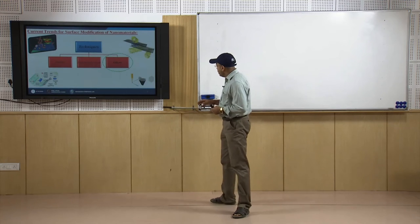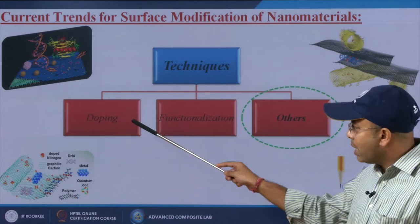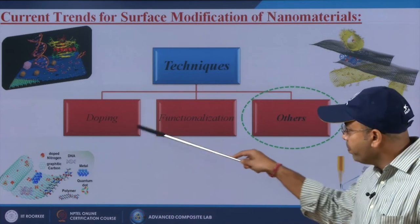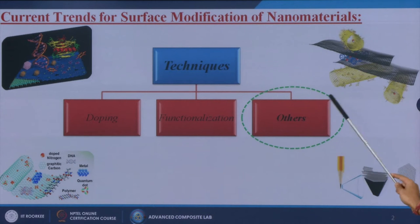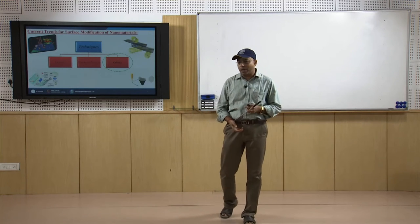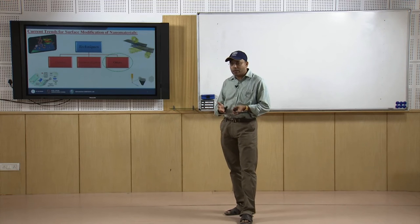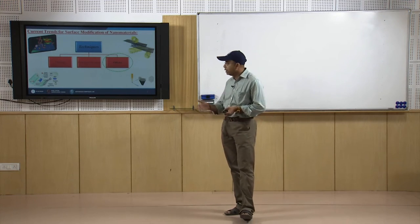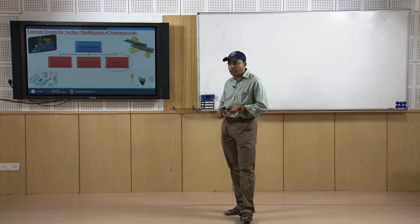If you remember, in our last two lectures we discussed about doping and functionalizations. In this particular lecture, we are trying to go for the other properties — maybe some kind of grafting will come, or maybe some kind of chemical reactions will come. These are the different types of methods which are not included in the doping part or the functionalization part; that part we are going to discuss under 'others.'